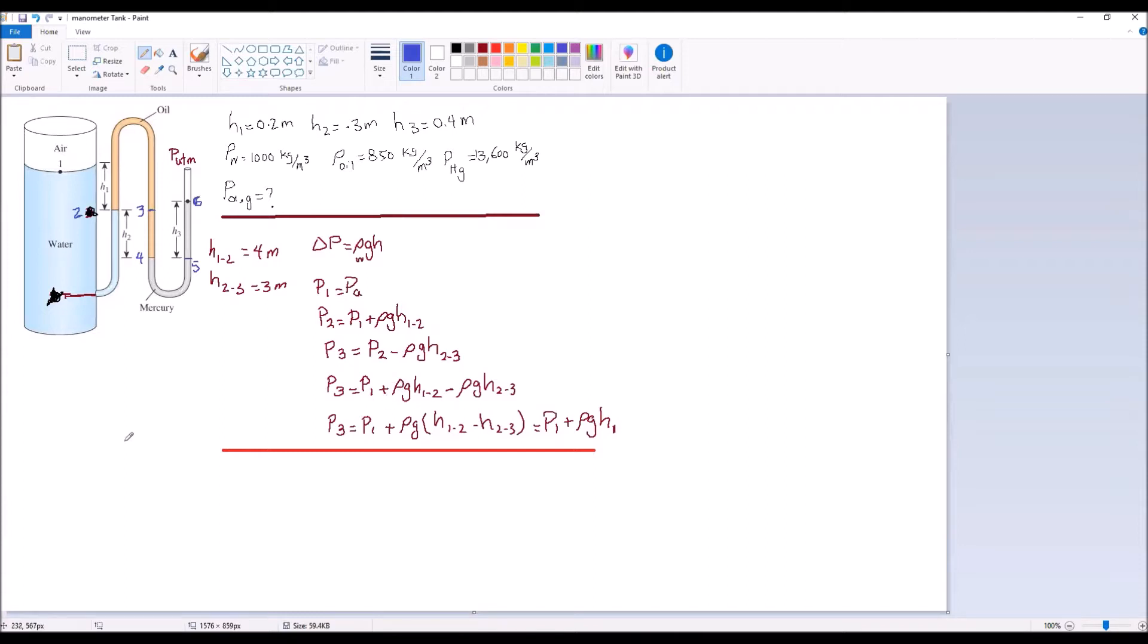Now use the general equation. Delta P is rho GH. All right. So starting from point 1, P1 is PA.